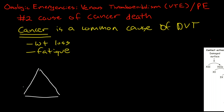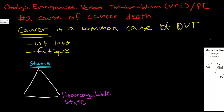Virchow was a pathophysiologist who lived several hundred years ago, and he proposed that three conditions needed to be in place in order for us to develop a thrombus in our veins: venous stasis, meaning blood flow is interrupted so the blood has a greater tendency to clot; a hypercoagulable condition, meaning the blood is in a hypercoagulable state; and endothelial injury, or injury to the vessel.